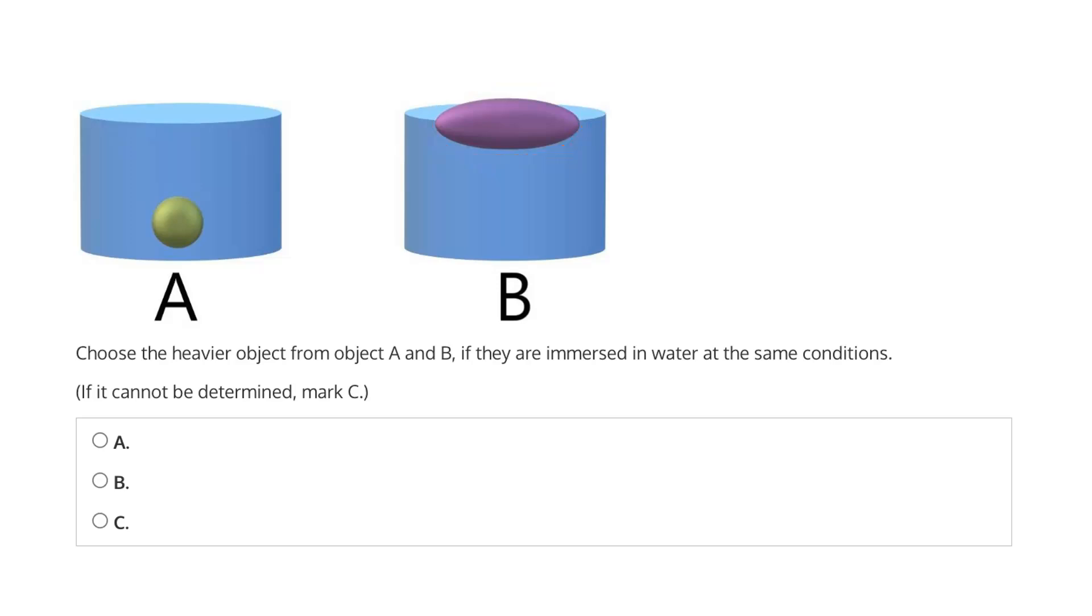But whether an object sinks or floats is a function of density. So we can say that the density of A is greater than the density of B, but that doesn't necessarily speak to the weight.